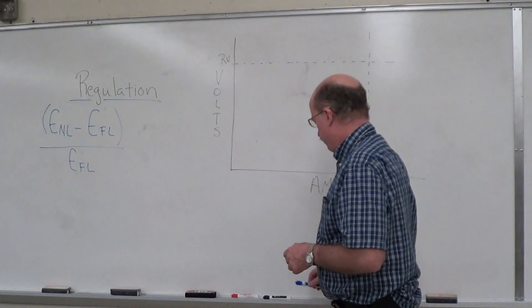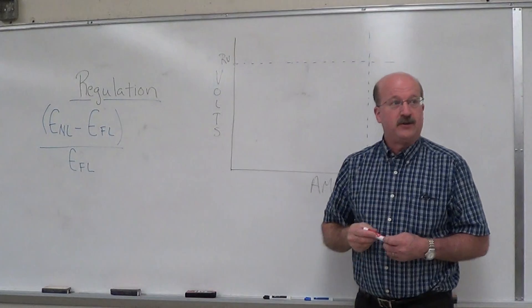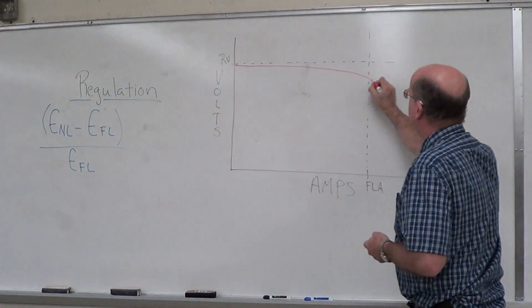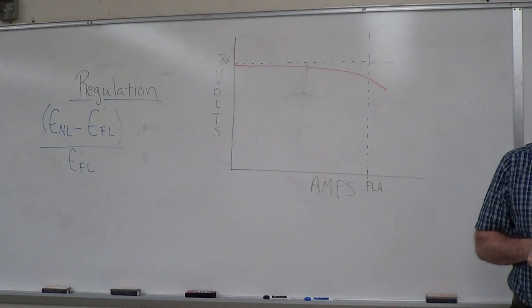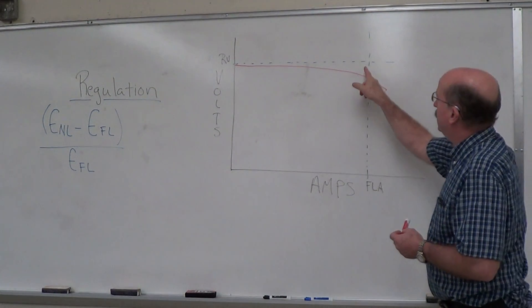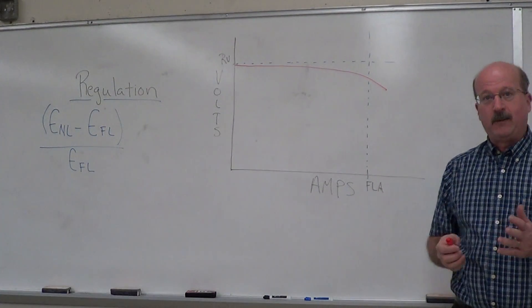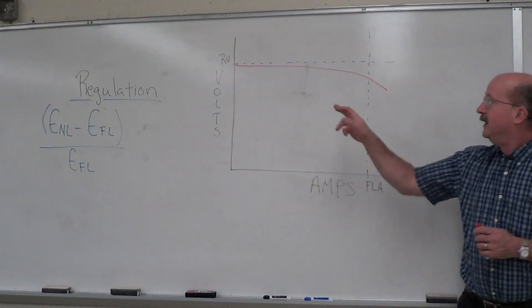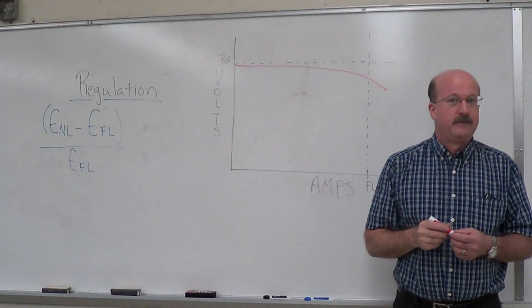So if you start off with your generator at no-load, you're going to be at your rated voltage, and if you come out somewhere down here below your rated voltage, you're going to have some regulation percentage there. We want to try and hit that as close as possible. We're talking about the compound generator being flat and having regulation across the entire load circuit for you.